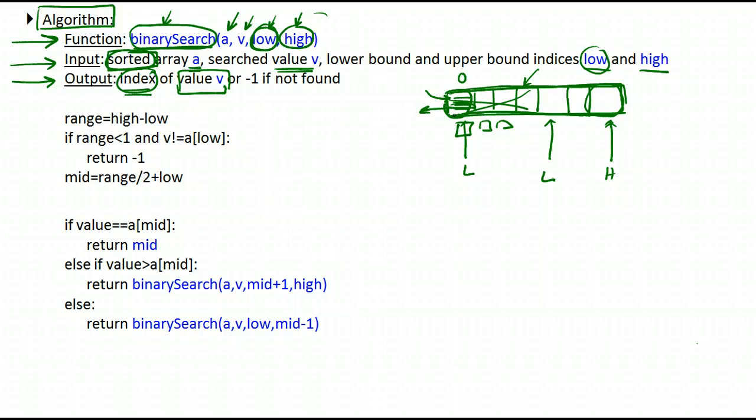In this particular example, I'm keeping it simple, there are only integers. Once we find the integer we're after, we return its corresponding index as proof that we've actually found it. And if we cannot find the value that we're after, we simply return minus one.